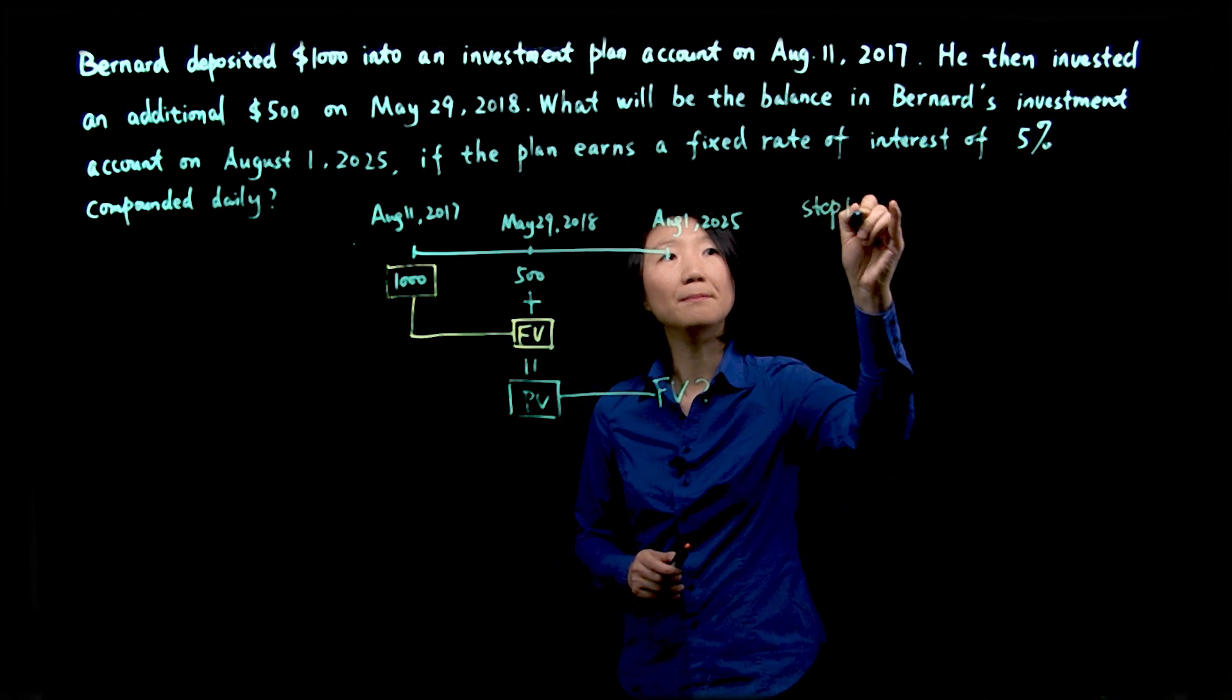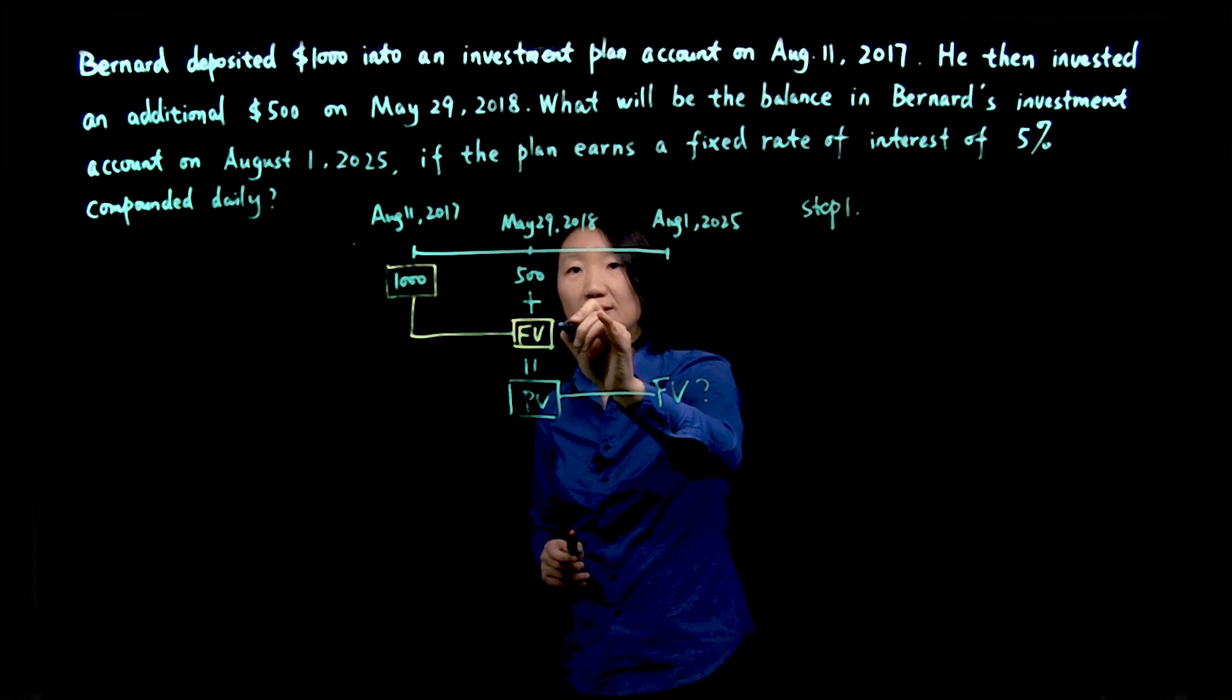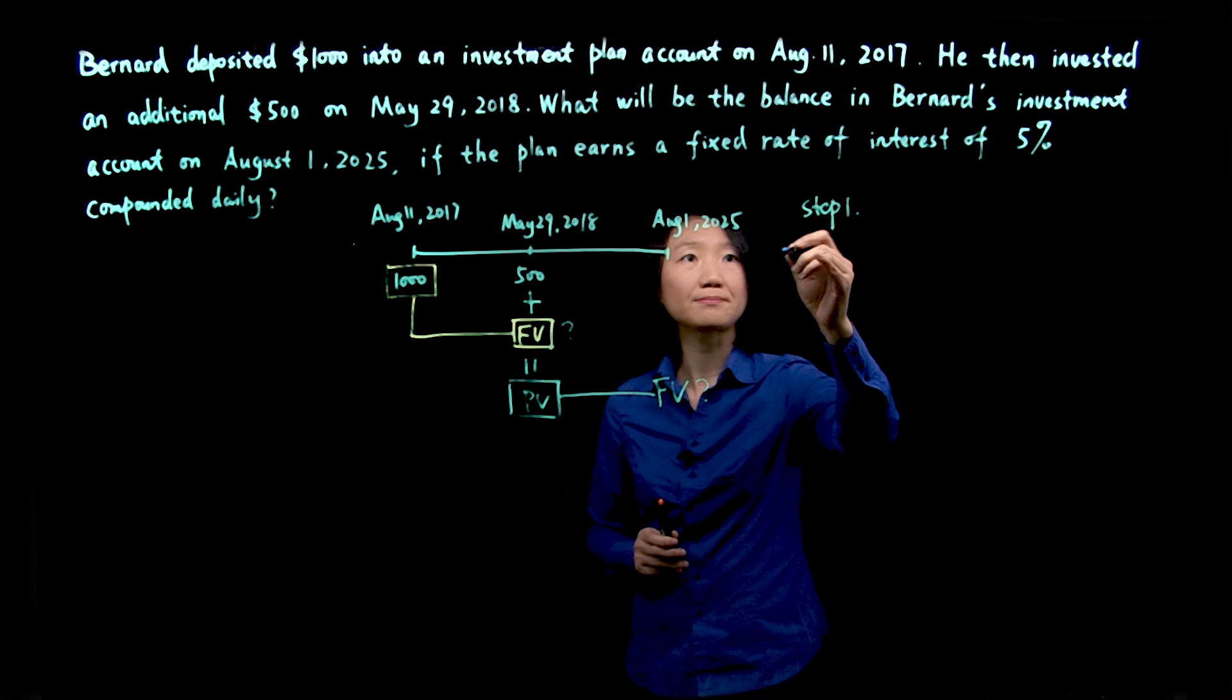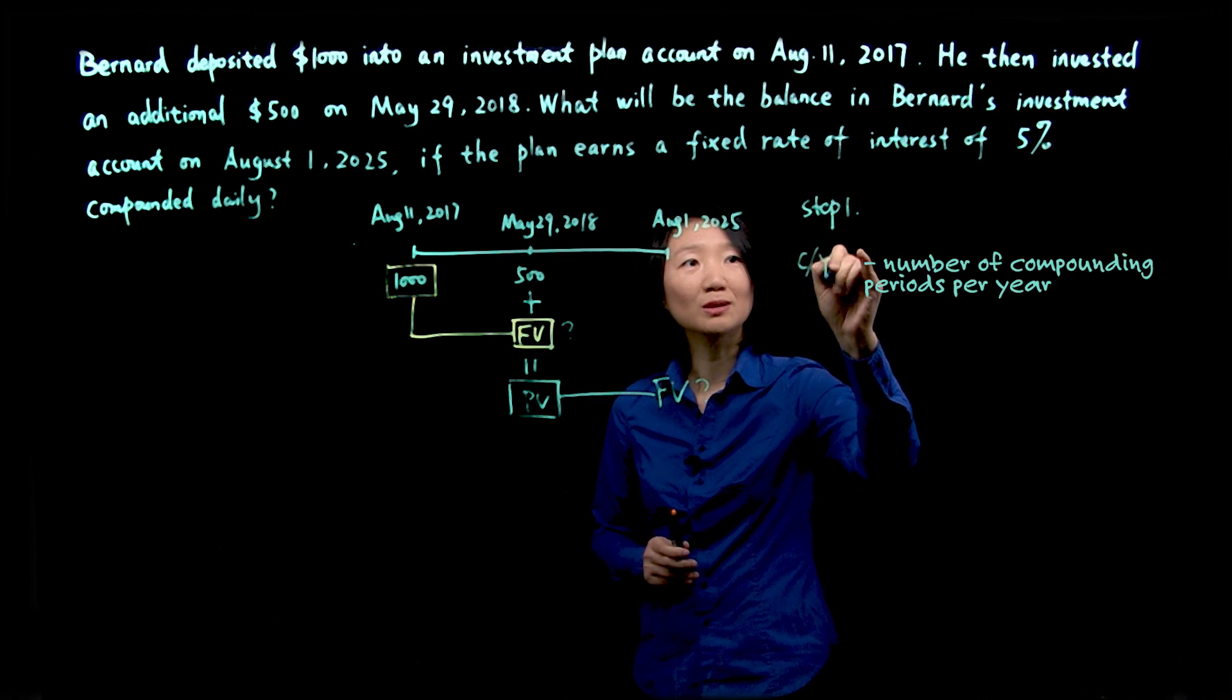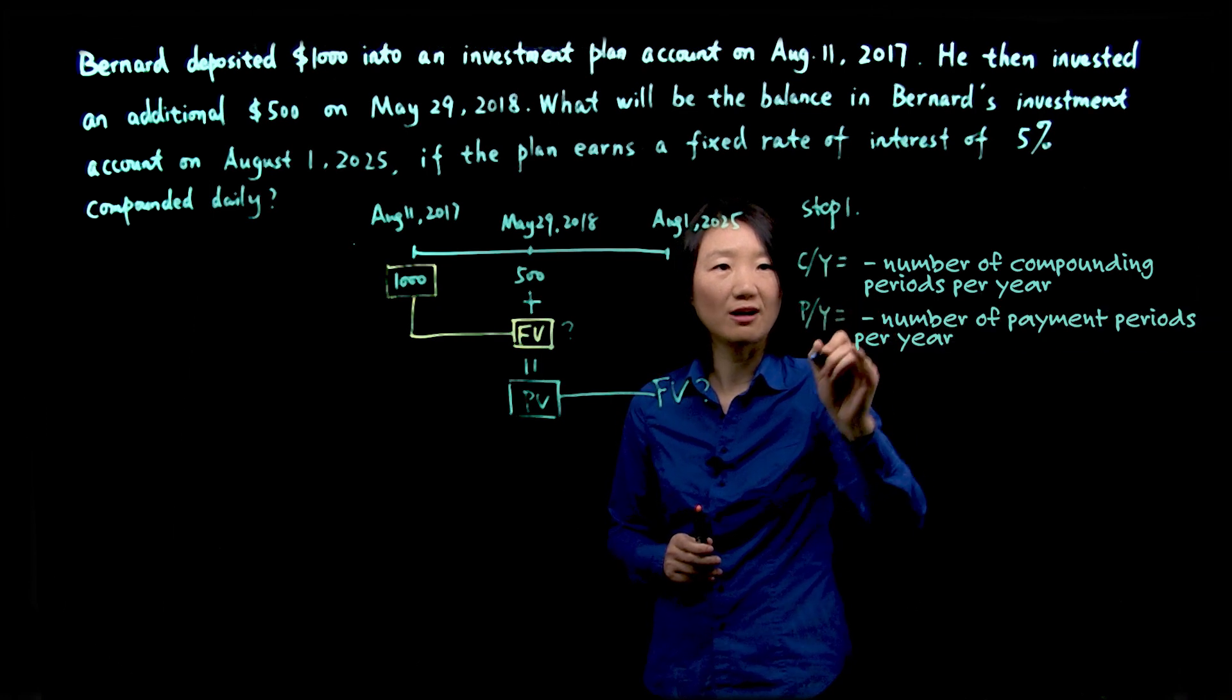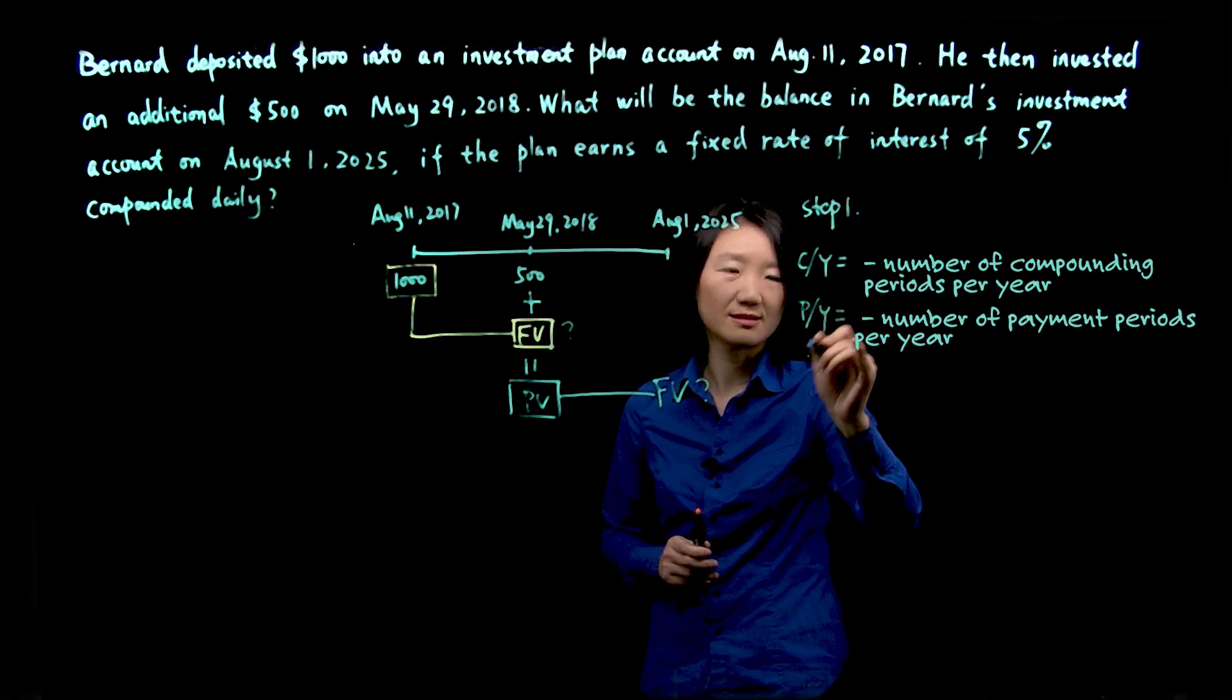Step one, we'll need to find out this future value of the $1,000 investment. In order to use the financial calculator, we have to identify the seven variables.